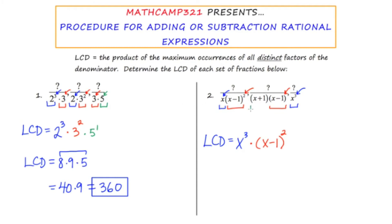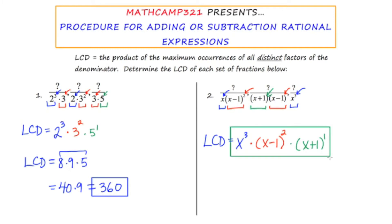Finally, there's x plus one, so I write that down. Its power is one, and it's unique, so no other powers to consider. The LCD for example two is x cubed times (x minus one) squared times (x plus one).